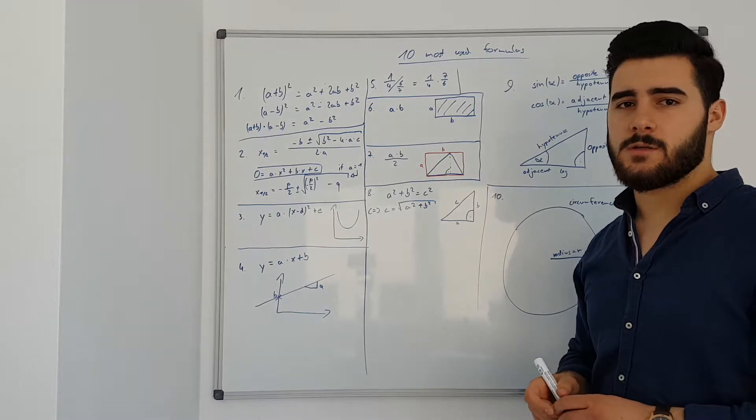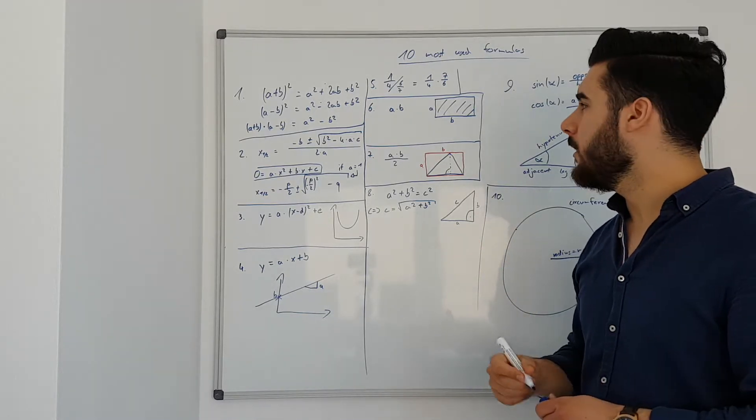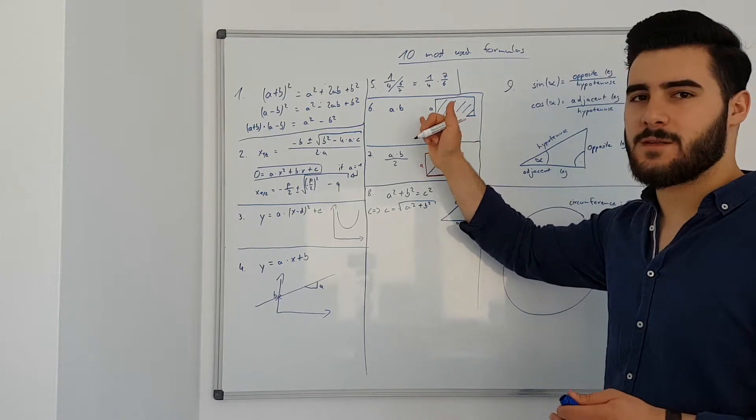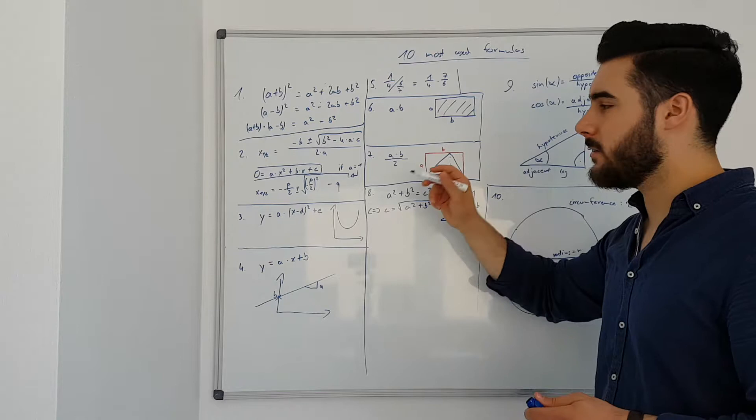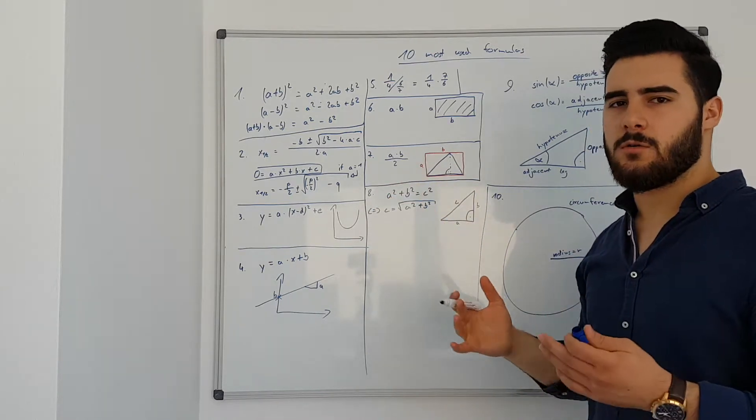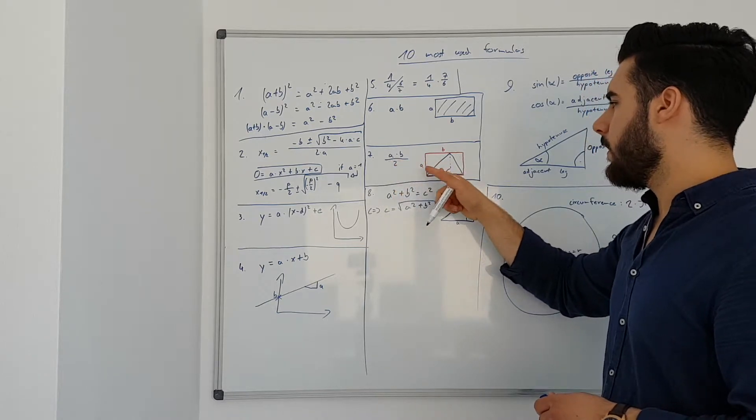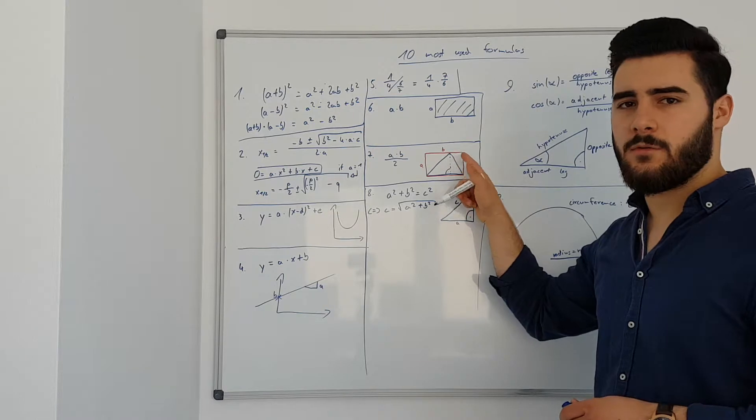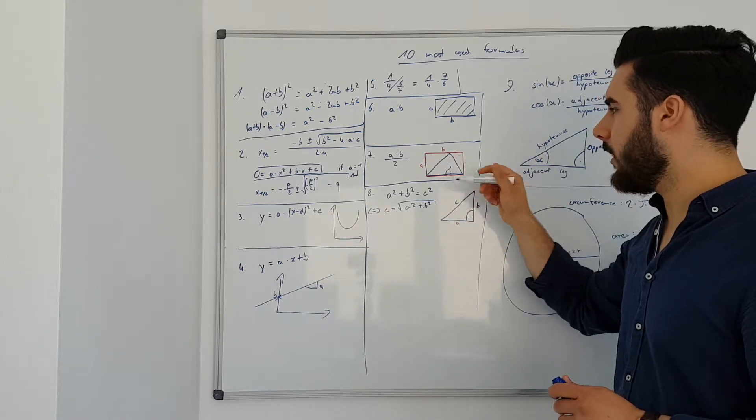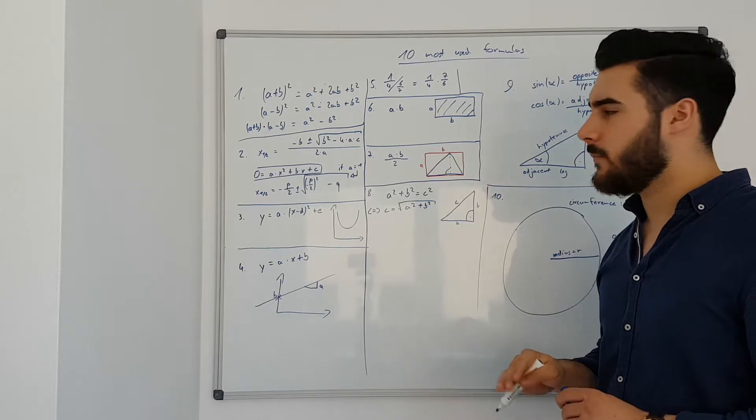The sixth formula is something that I already mentioned in another video. Basic formula for an area, a times b gives you the area of a rectangle. Almost the same goes for a triangle. So you first calculate a times b for the area of the whole rectangle and then you divide by 2 because you only have half of the area.